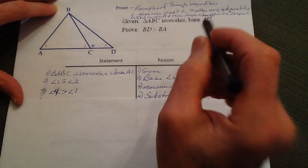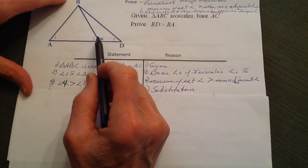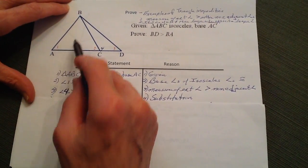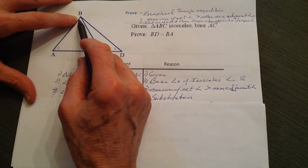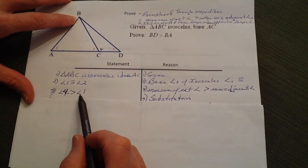And we also know by this inequality theorem that angle four is going to be greater than either one or one of this angle. Let me just call it B up here. But in this case right here, I'm going to say that angle four is greater than angle one.